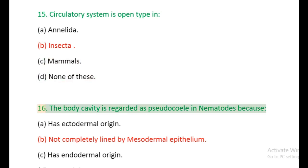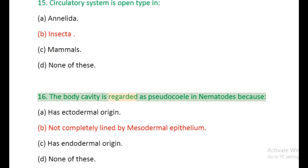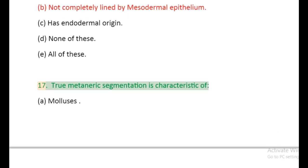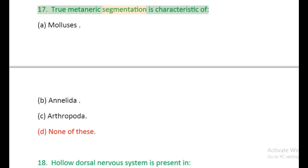Question 16: The body cavity is regarded as pseudocoelom in nematodes because: (a) Has ectodermal origin, (b) Not completely lined by mesodermal epithelium, (c) Has endodermal origin, (d) None of these, (e) All of these. Question 17: True metaneric segmentation is characteristic of: (a) Molluscs, (b) Annelida, (c) Arthropoda, (d) None of these.